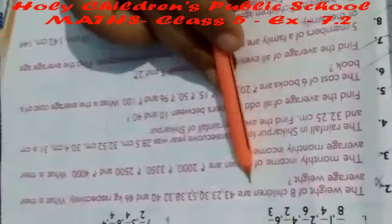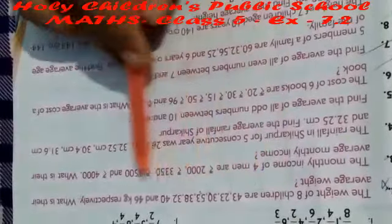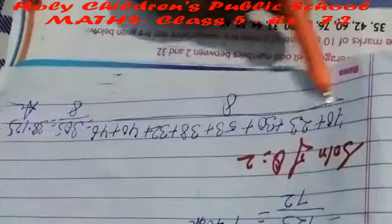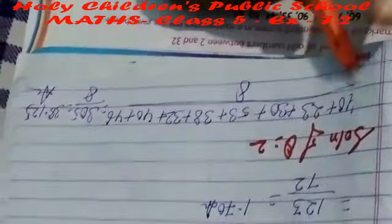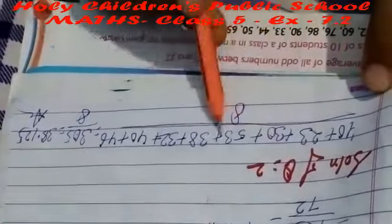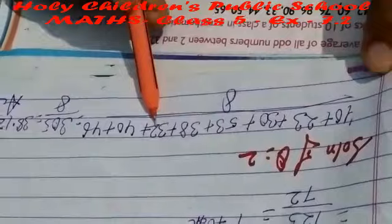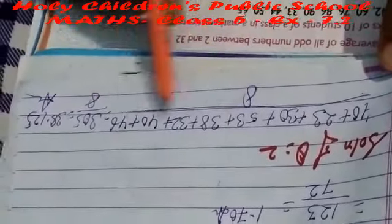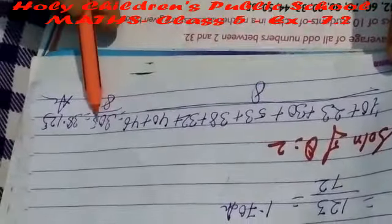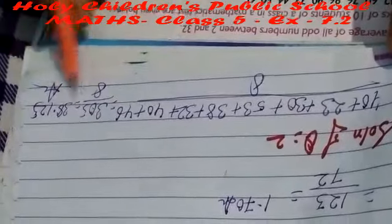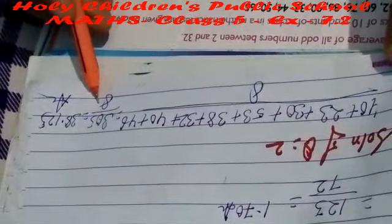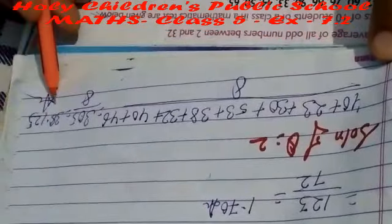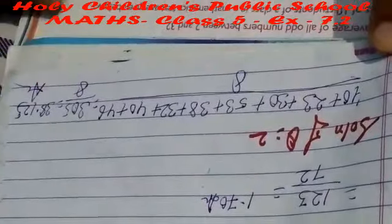Question number 2: the weights of 8 children are given. What is the average weight? We write 40 + 23 + 30 + 53 + 38 + 32 + 40 + 46, divided by 8. The sum of the total numbers is 305 divided by 8. When we calculate this, the answer is 38.125.